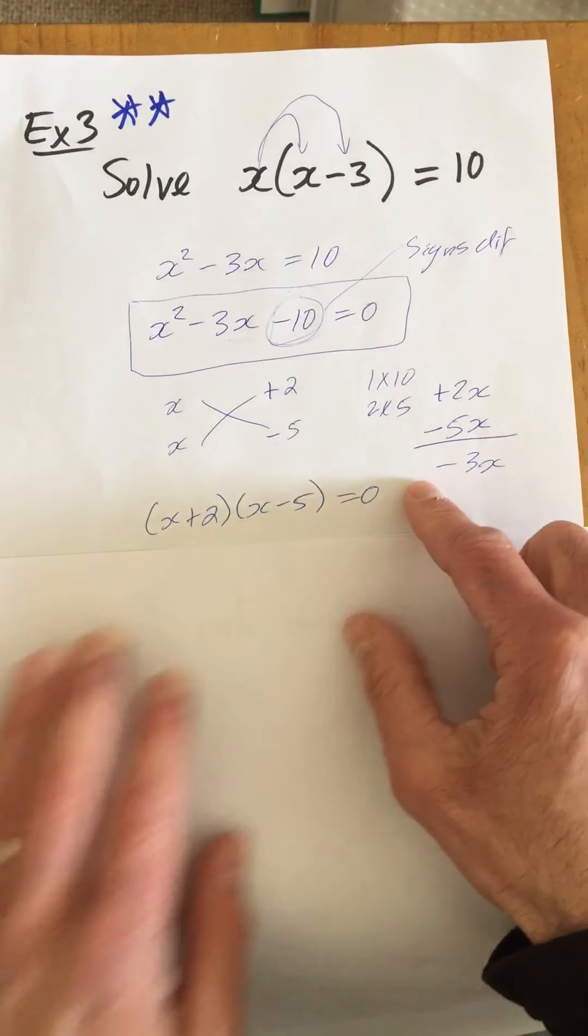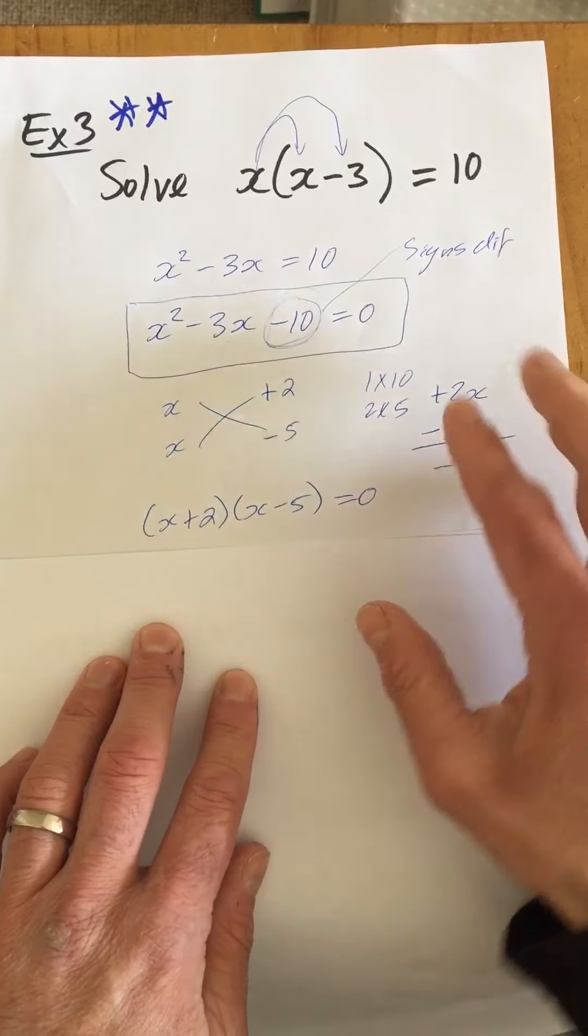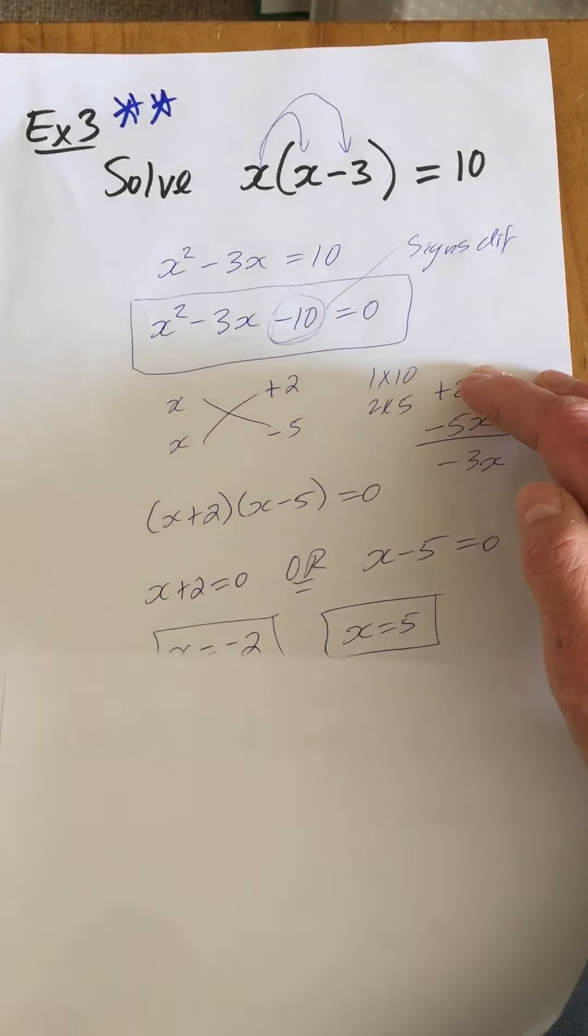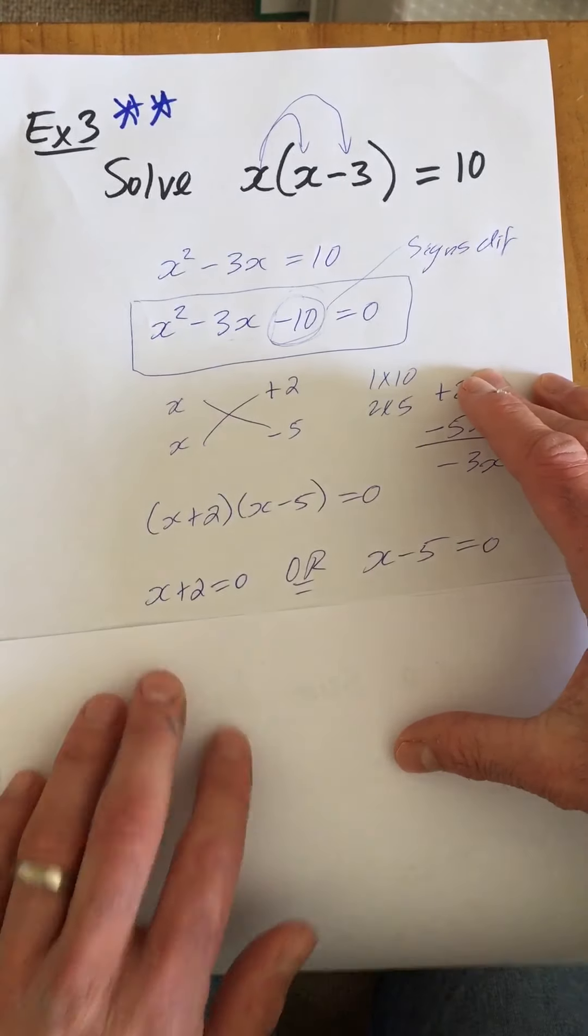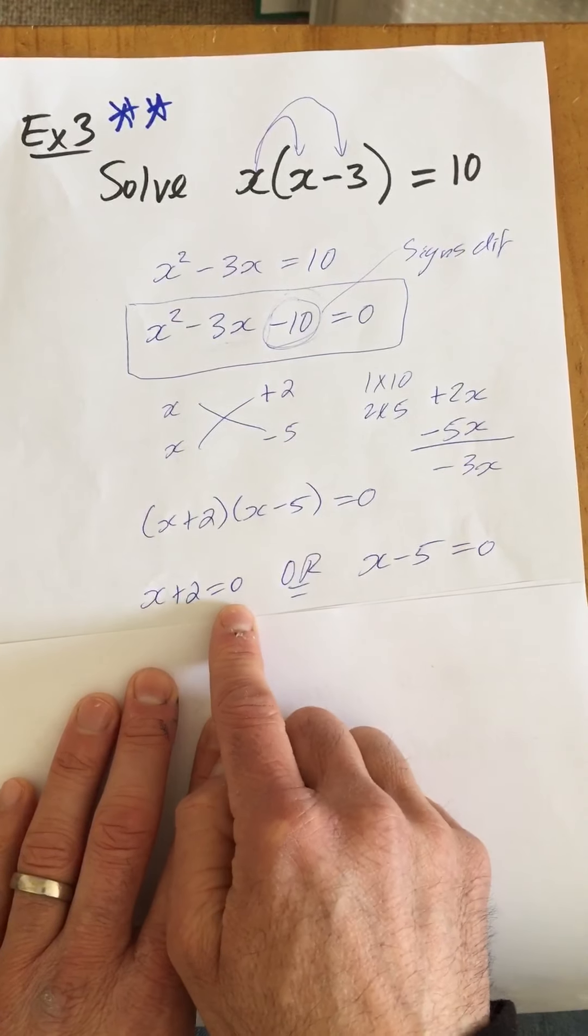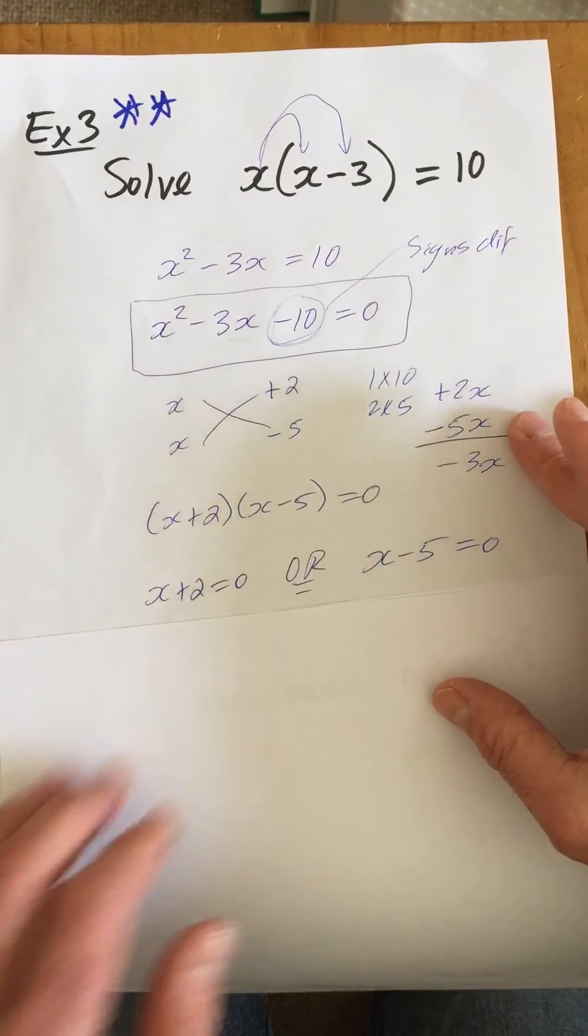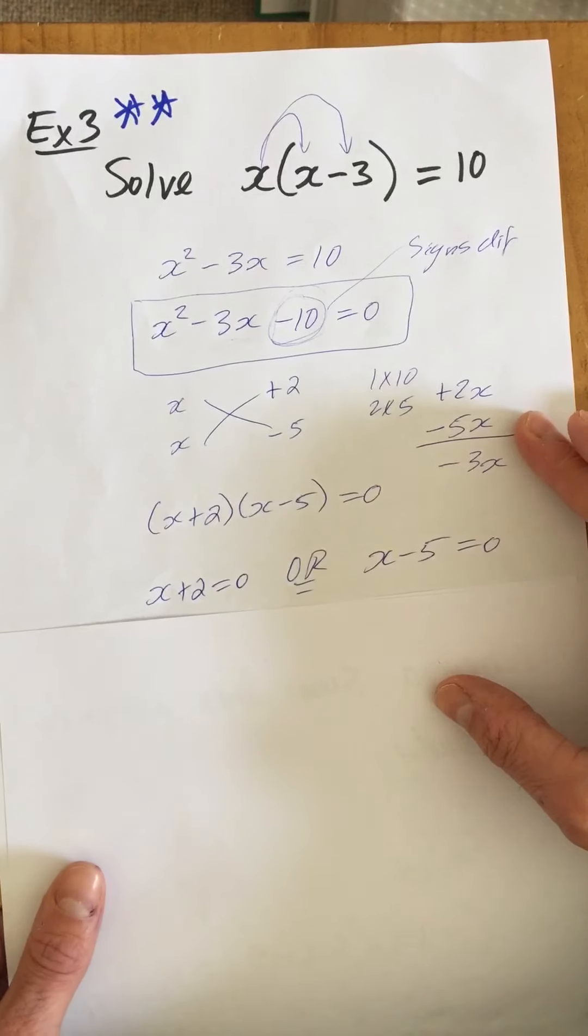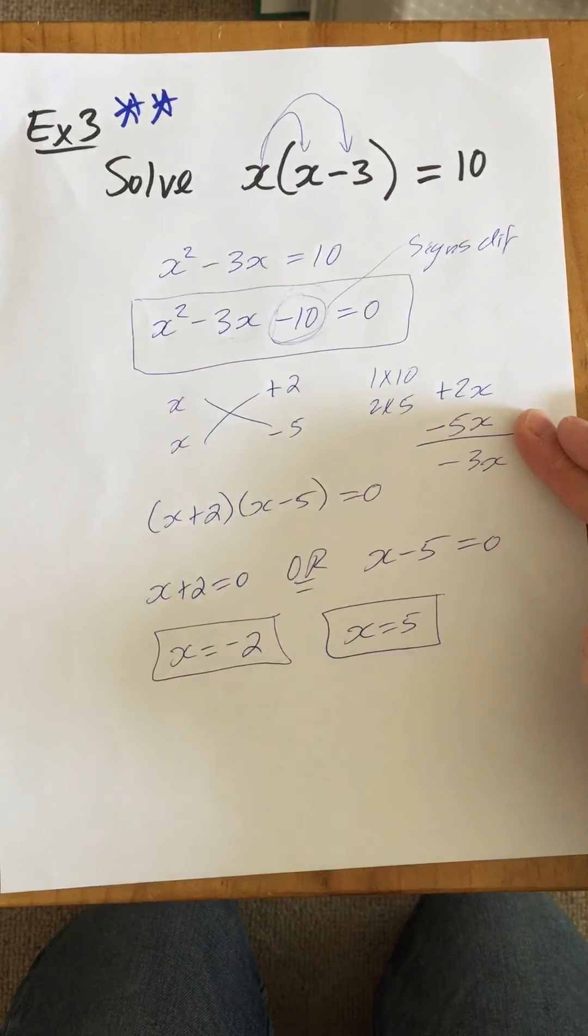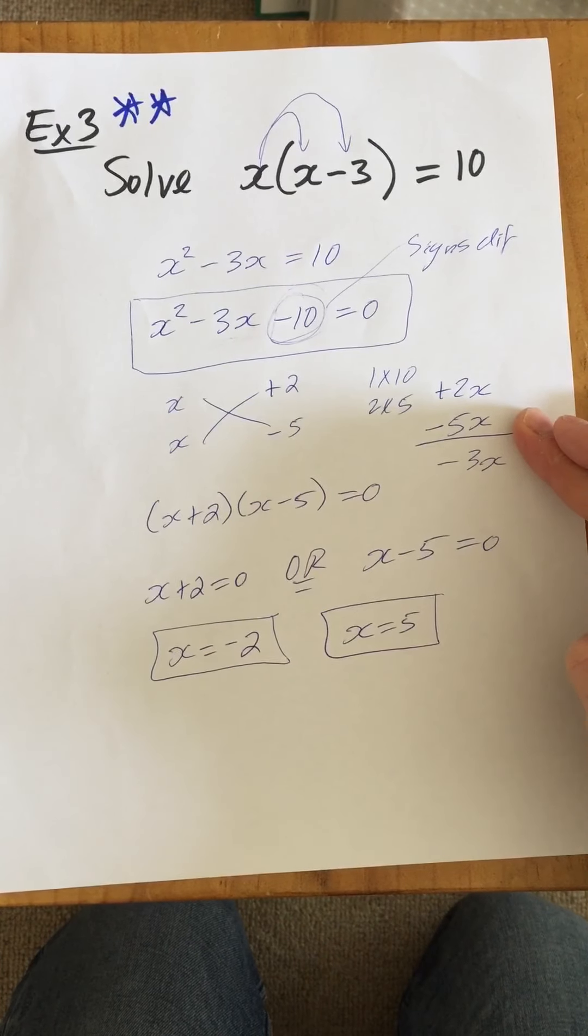And because it's now equal to zero, we're allowed to put each factor equal to zero separately. And we get x+2=0 or x-5=0. And we solve both those equations and we get x=-2 and x=5.